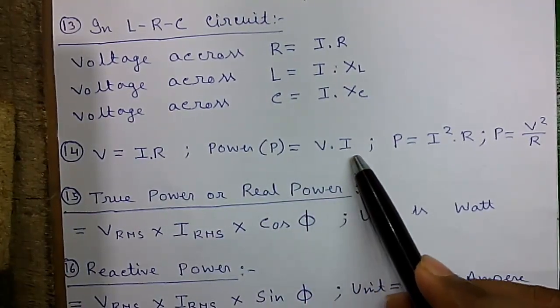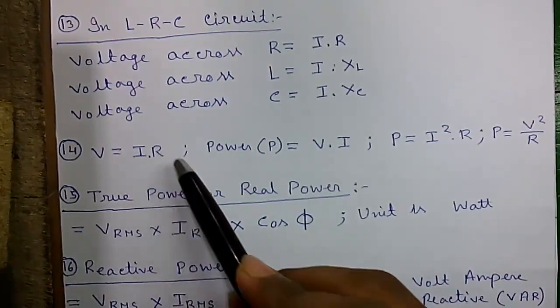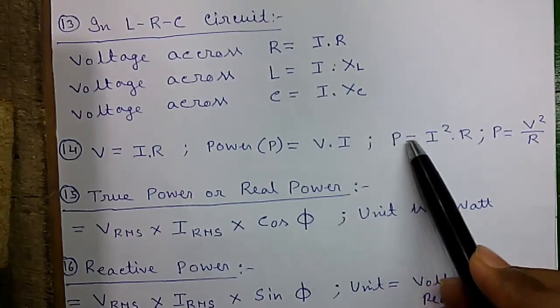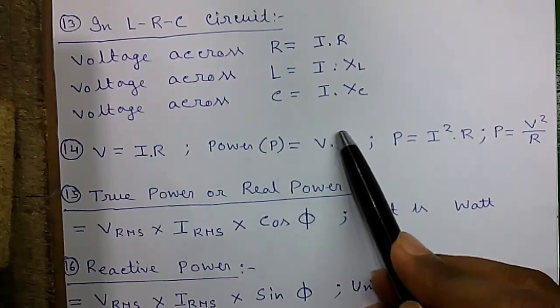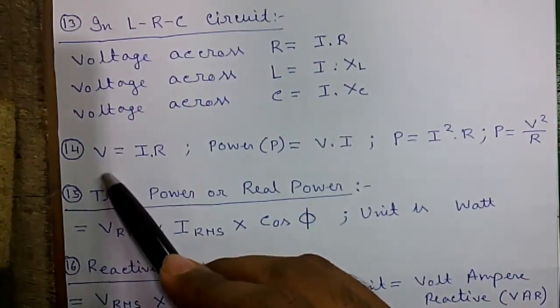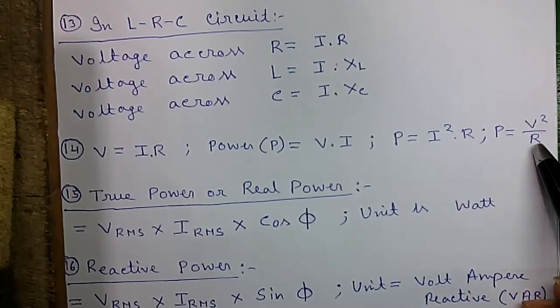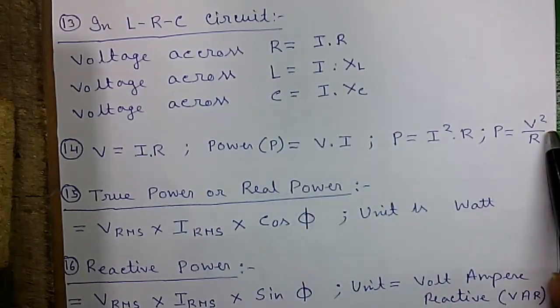Power P equals voltage into current. So if you replace V by IR, you get IR into I, that is P equals I squared R. Similarly, if you replace I by V by R, then you will get V by R into V, that is V squared by R. So all three formulas are true for power.